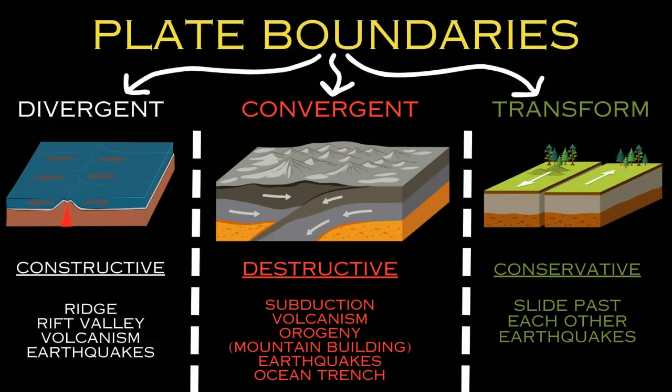The Rift Valley forms at a continental divergent plate boundary. The best example is the East African Rift Valley system, while the mid-ocean ridge is the classic example for oceanic divergent boundaries.